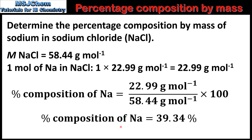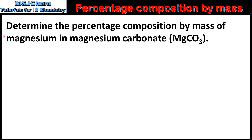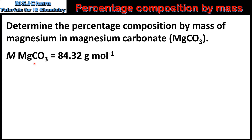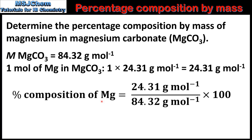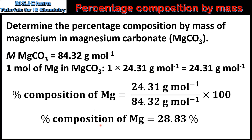Which gives us a percentage composition of sodium of 39.34%. In our final example we'll determine the percentage composition by mass of magnesium in magnesium carbonate. The molar mass of magnesium carbonate is 84.32 grams per mole. 1 mole of magnesium carbonate has 1 mole of magnesium, so we multiply the molar mass of magnesium by 1, which gives us 24.31 grams per mole. To calculate the percentage composition by mass of magnesium we divide 24.31 by 84.32 and multiply by 100, which gives us 28.83%.